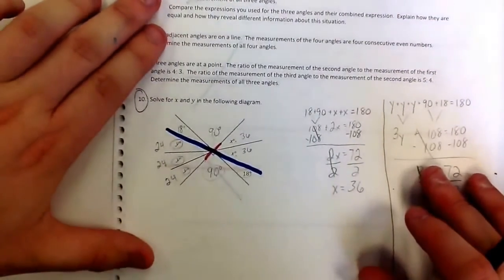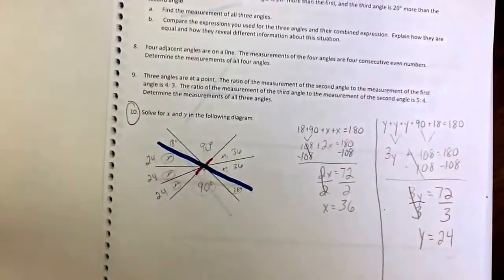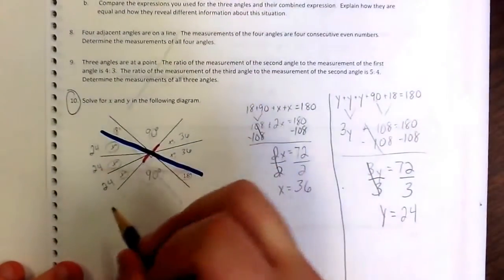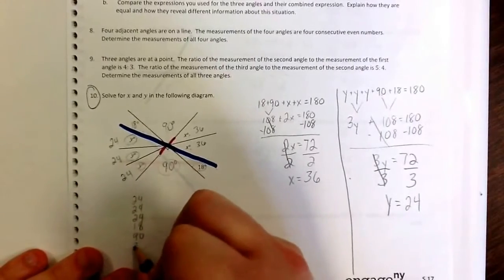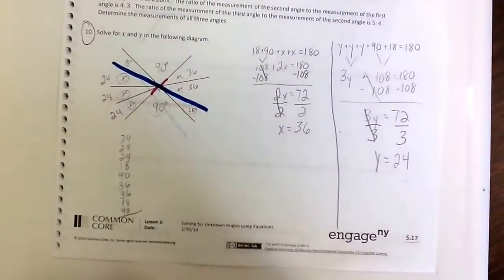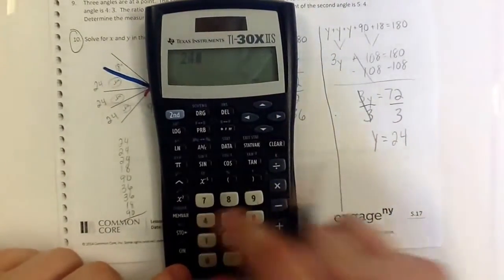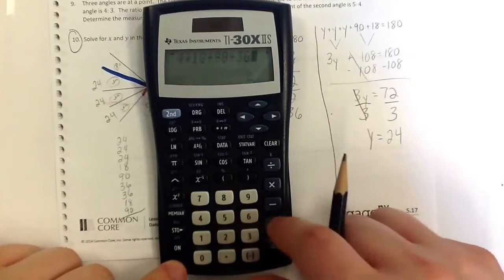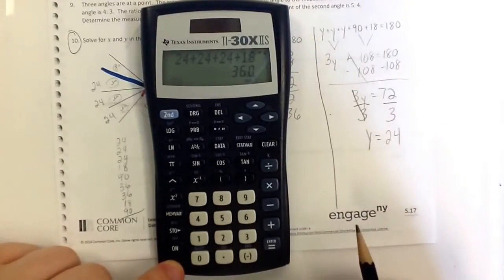To check, we can add up all the angles and we should get 360, because all angles in a circle add up to 360 degrees. Adding 24 plus 24 plus 24 plus 18 plus 90 plus 36 plus 36 plus 18 plus 90 equals 360 degrees. It works out — we are correct!